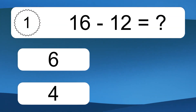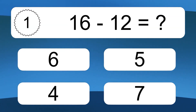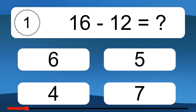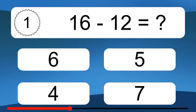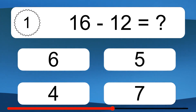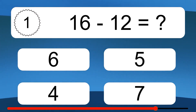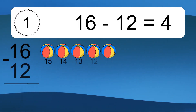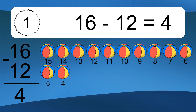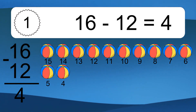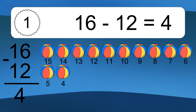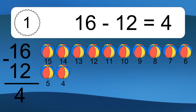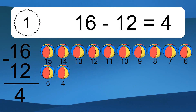16 minus 12 equals what? 16 minus 12 equals 4. Let's count it. 15, 14, 13, 12, 11, 10, 9, 8, 7, 6, 5, 4.